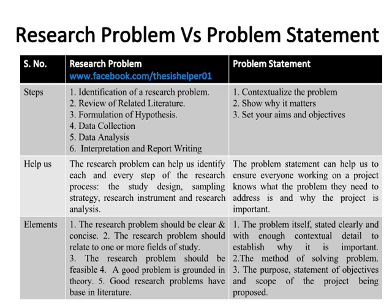The elements of research problems are five: number one, the research problem should be clear and concise; number two, it should relate to one or more fields of study; number three, it should be feasible; number four, a good problem is grounded in theory; number five, good research problems have a base in literature.